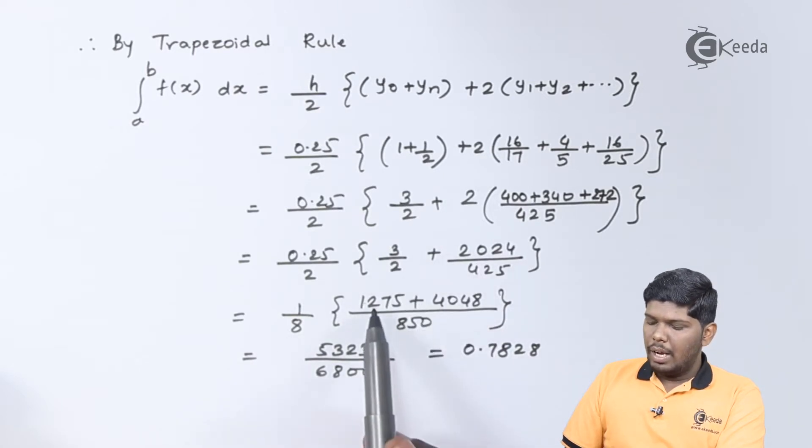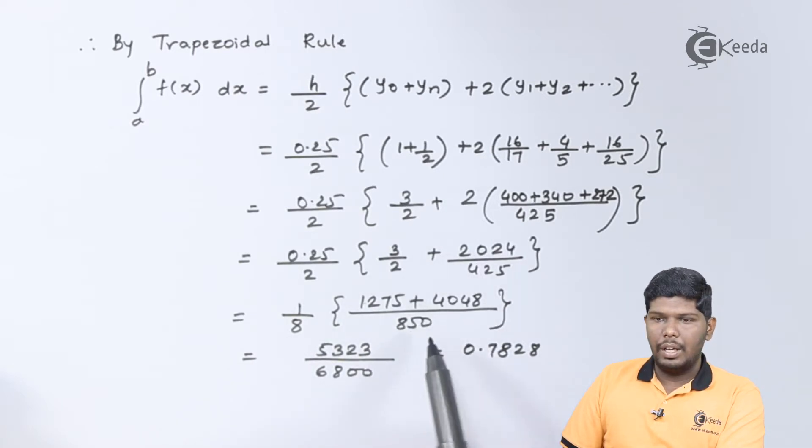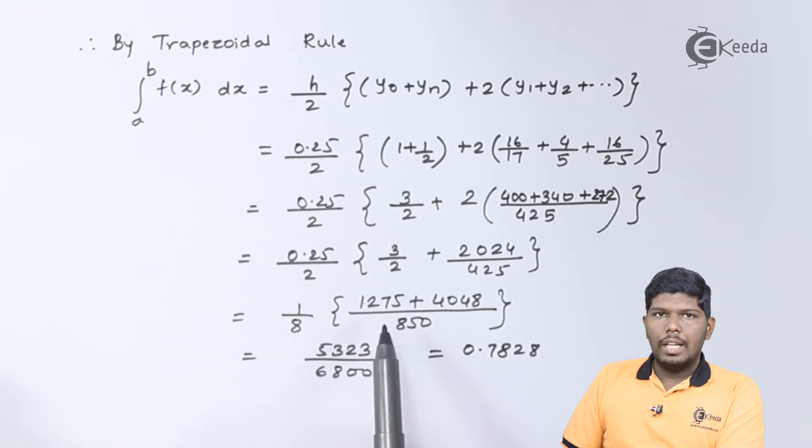Again, on cross multiplication, we have 1275 plus 4048 upon 815. On solving these two fractions, the approximate answer will be equal to 0.7828.